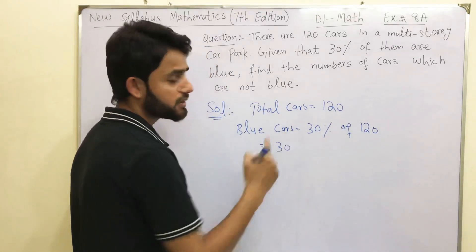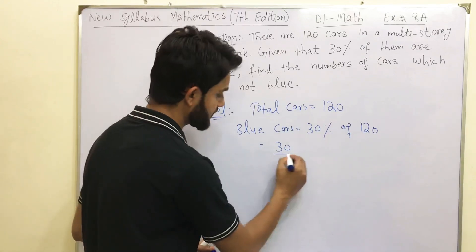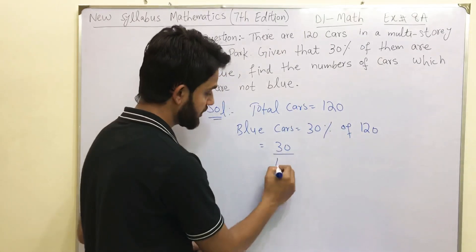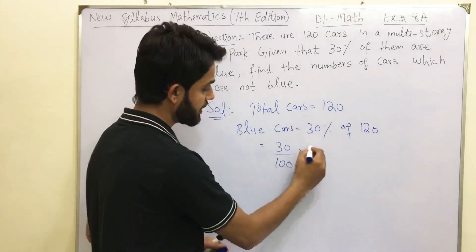We know that the percent is basically a combination of per and cent. Per means line, cent means 100. So you see 30% of means multiply in math, times 120.